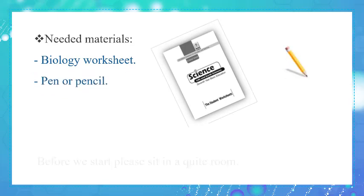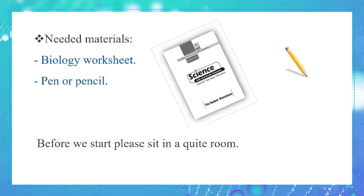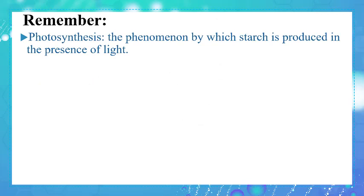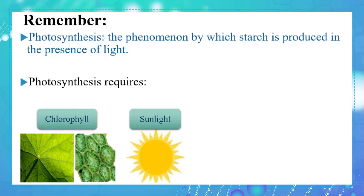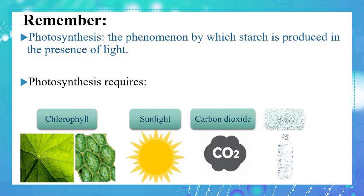Don't forget to bring your worksheet and a pen or a pencil. Before we start, please sit in a quiet room. Photosynthesis is the phenomenon by which starch is produced in the presence of light. For a plant to make photosynthesis it needs chlorophyll, sunlight, carbon dioxide and water.